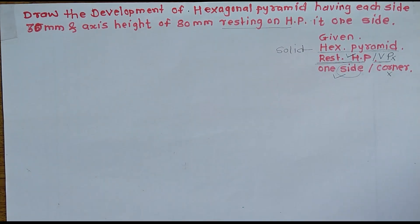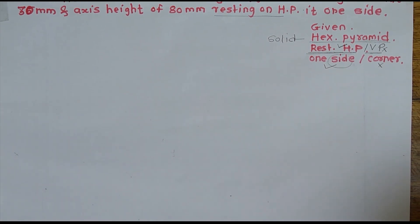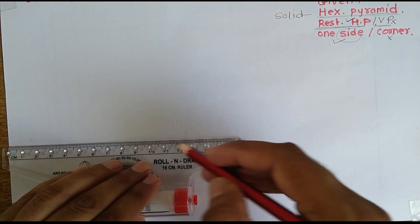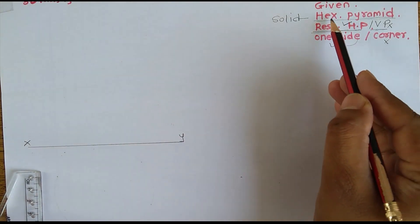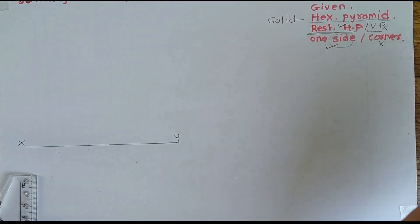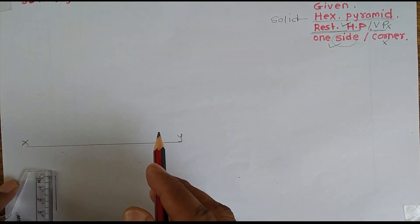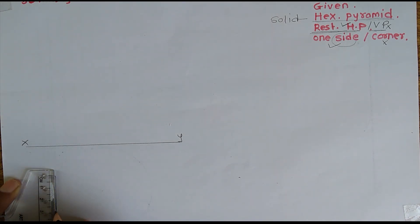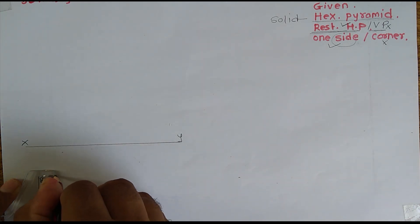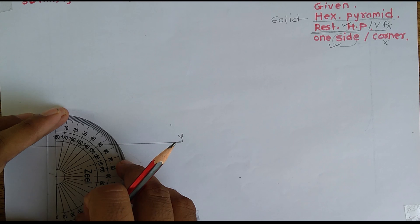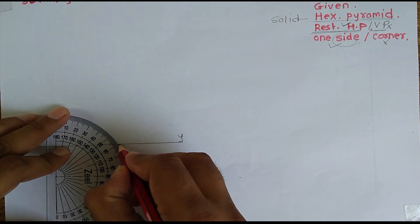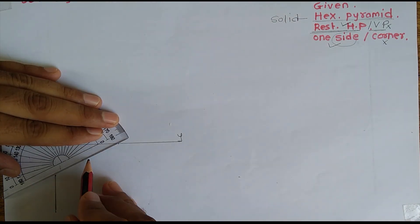As per this problem statement, I will start the problem. Here I will draw first the XY line, which will help us for reference. This hexagonal pyramid is resting on HP on one of its sides, so I will draw that side with a dimension of 30 mm. With the help of a protractor, I have to take the included angle of this hexagonal pyramid, which is 120 degrees.